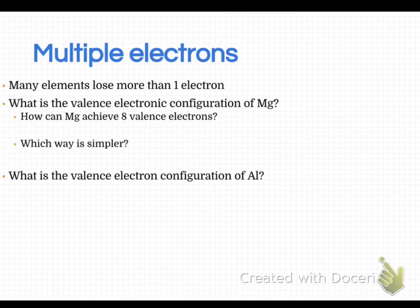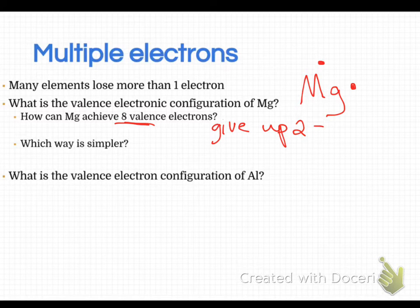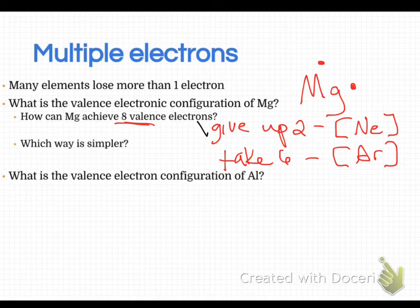All right, so sometimes elements want to lose more than one electron. Let's say, for instance, we have magnesium, which is in group two, so it has two valence electrons. That means we have two options here. Either magnesium can give up two electrons to become similar to the element neon, so it's isoelectronic with neon, or it could take six electrons to become like argon. So we have to ask ourselves, which way is simpler? The answer to that is that taking six electrons is really difficult, but giving up two electrons is comparatively simple.